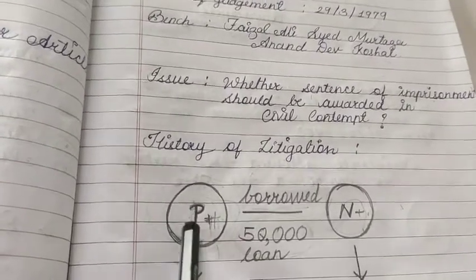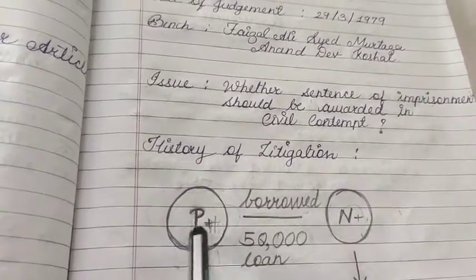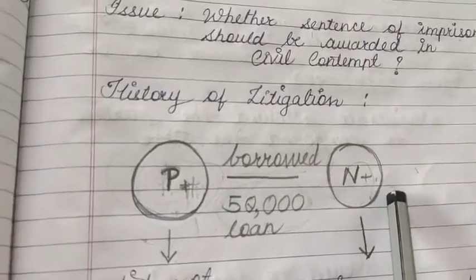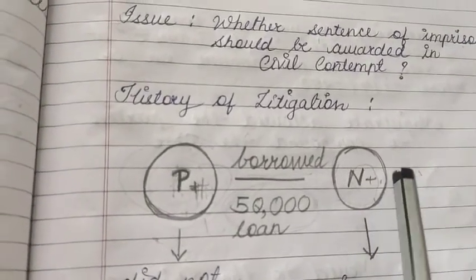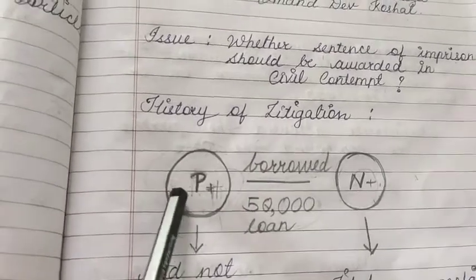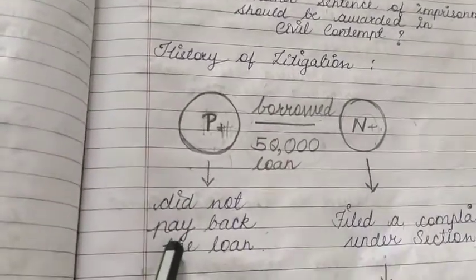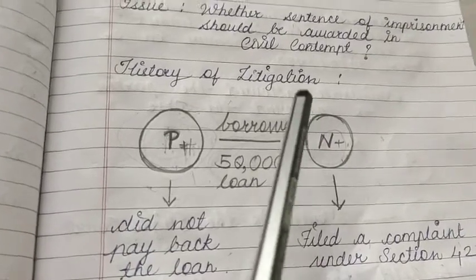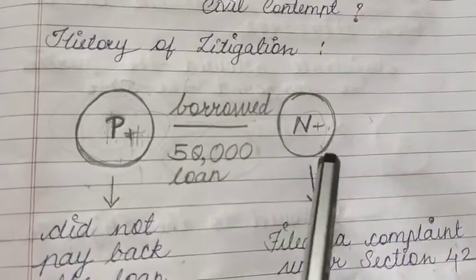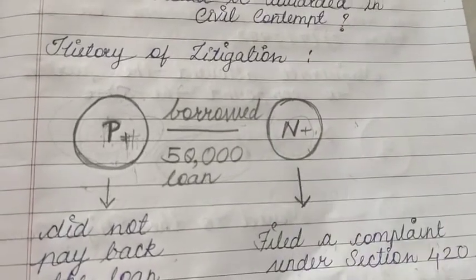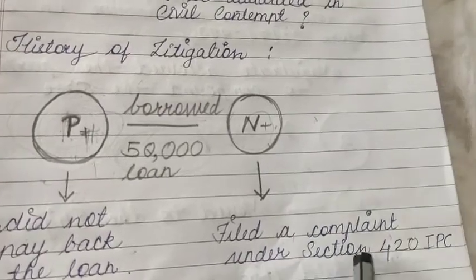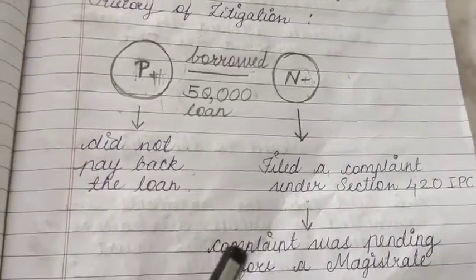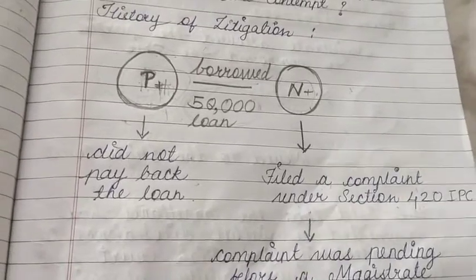Pushpa Ben and the other party had taken a loan from Narendas V. Badyani. Narendas then filed a complaint under Section 420 of the IPC, and this complaint was pending before a magistrate.